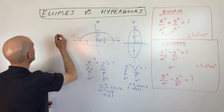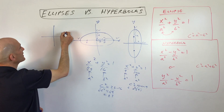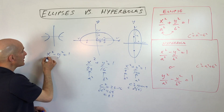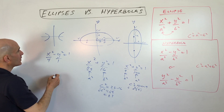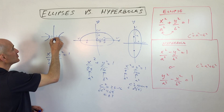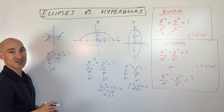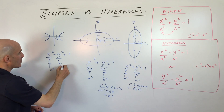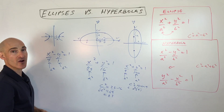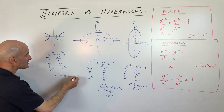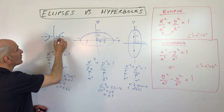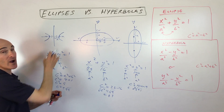Let's graph a hyperbola opening left and right: x squared over 4 minus y squared over 1 equals 1. The a squared is 4, so a equals plus or minus 2 — we go right 2 and left 2 to find the vertices. To find the foci, we use c squared equals a squared plus b squared, just like the Pythagorean theorem. That gives us 4 plus 1 equals 5, so c equals plus or minus the square root of 5 — just a bit further out from the center.